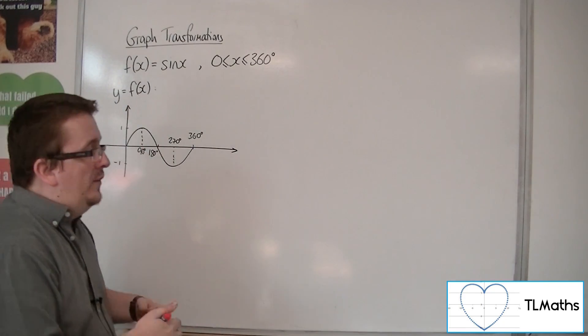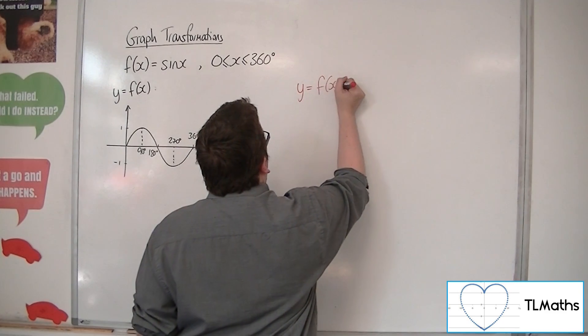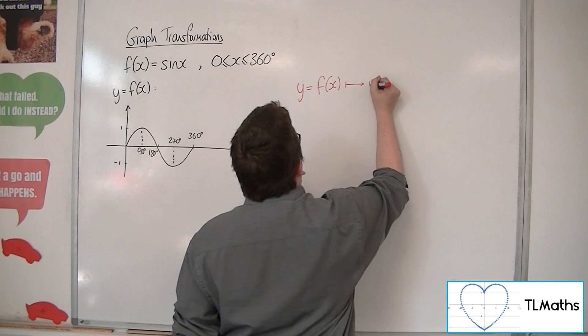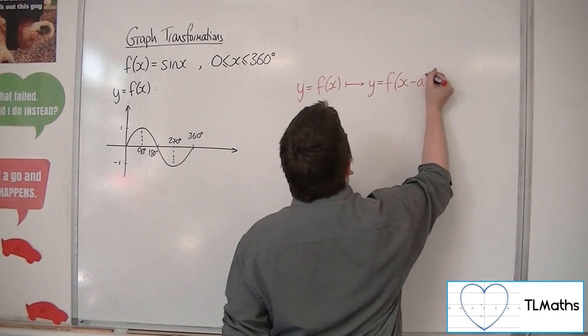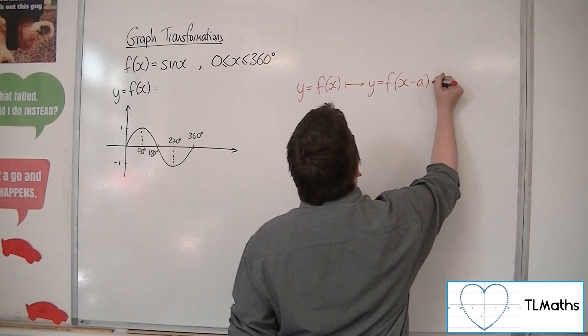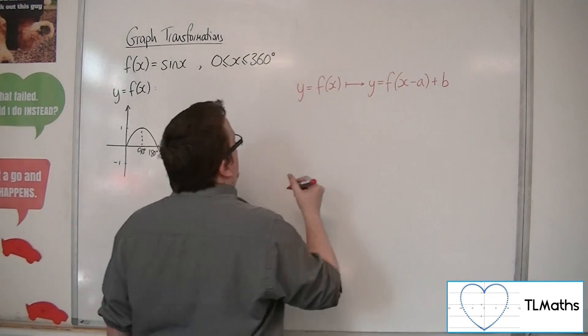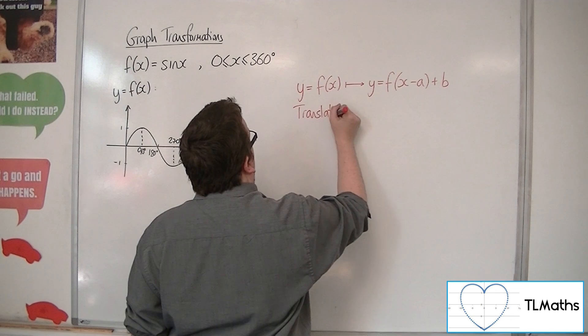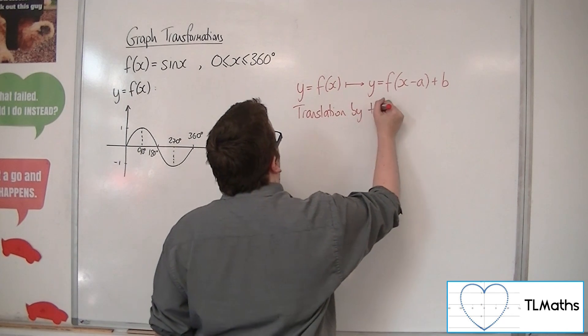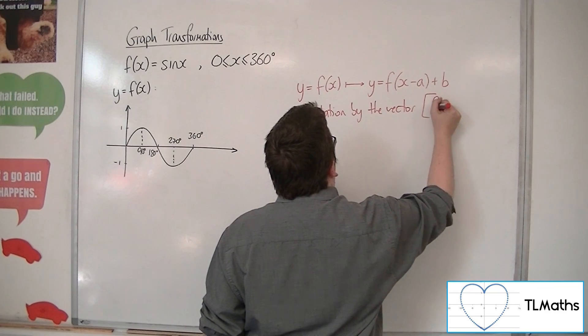So when we say that y equals f of x is transformed by y is equal to f of x minus a inside the bracket plus b outside the bracket, then this is a translation by the vector a, b.